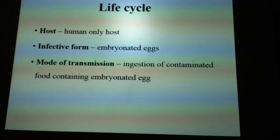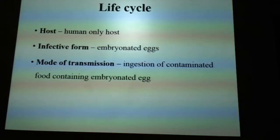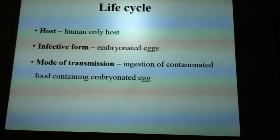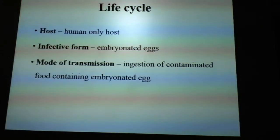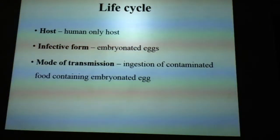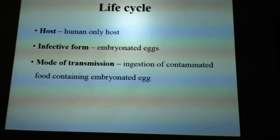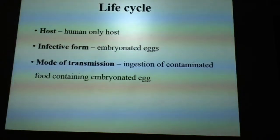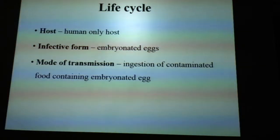Before writing the life cycle, you need to identify: which is the host for this parasite, which is the infective form, and what is the mode of transmission. The host for Trichuris trichura is human only — it has only one host. The infective form is the embryonated egg. The mode of transmission is ingestion of contaminated food containing embryonated eggs.